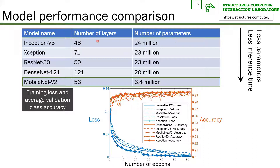Let's see the model performance comparison. As you can see, our modified MobileNet V2 has the smallest number of parameters and the shortest training and testing time. We are only losing about 5% accuracy compared to more complicated models.